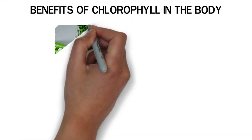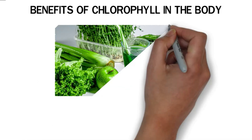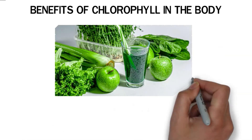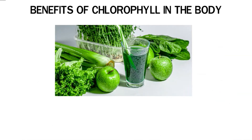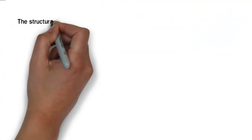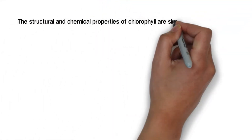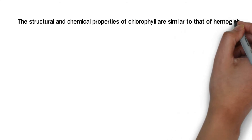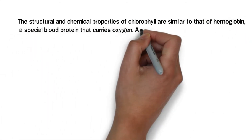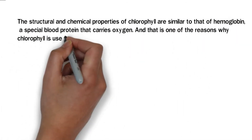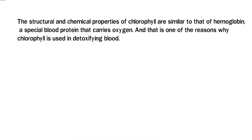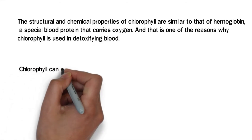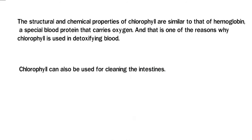Aside from keeping green plants healthy, chlorophyll has therapeutic properties and can improve health. It contains powerful antioxidants and vitamins that can boost the immune system. The structural and chemical properties of chlorophyll are similar to that of hemoglobin, a special blood protein that carries oxygen, which is one of the reasons chlorophyll is used in detoxifying blood. Chlorophyll can also be used for cleaning the intestines.